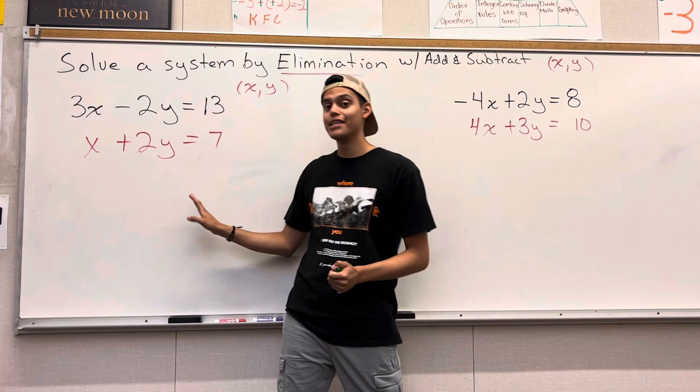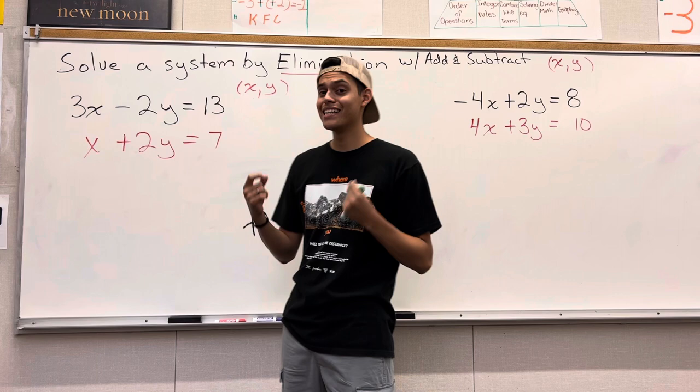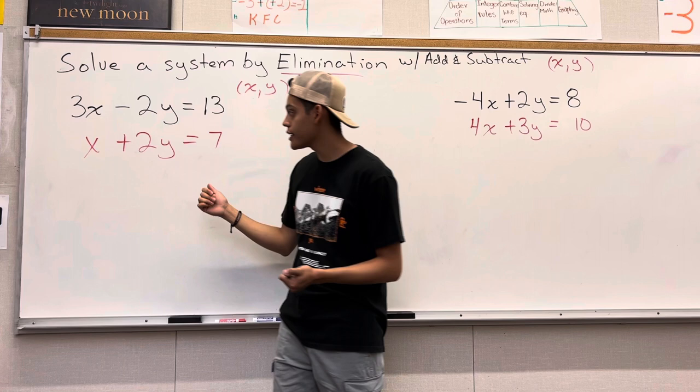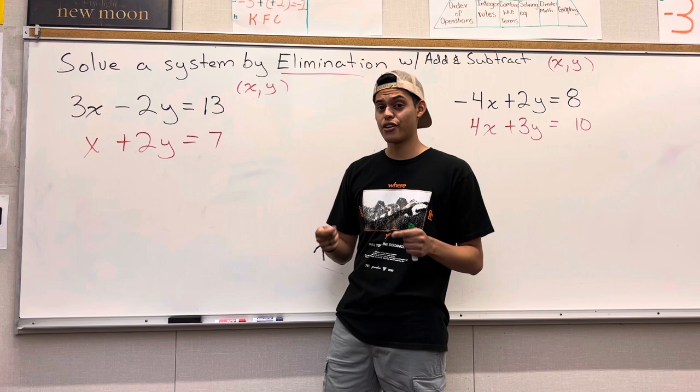Today we're going to be solving a system by elimination. First, this video is going to be dealing with addition. In the next video, we're going to do subtraction, but today we're going to be focusing on addition. Okay, so we have these two equations right here: 3x minus 2y equals 13, and x plus 2y equals 7. They're both in standard form.